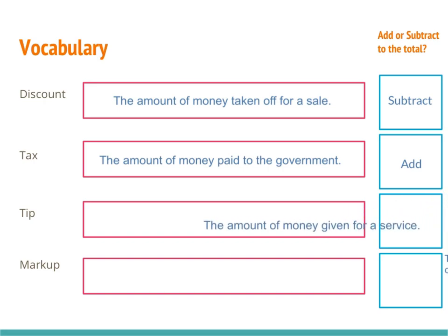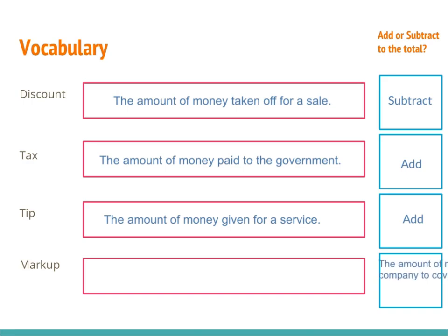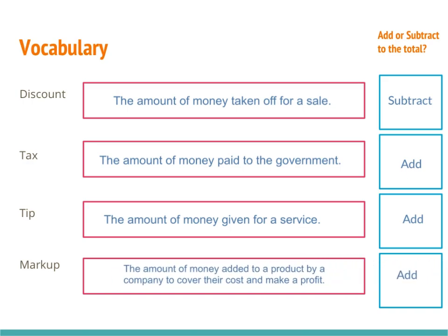Tip is the amount of money given for a service. A haircut, for example, is a service — you don't walk out of the store with anything in your hands, but you paid for something to happen. We generally add a tip to the bill. Markup is the amount of money added to a product by a company to cover their overhead cost and to make a profit. A store like Target has to charge you more than they paid for it to cover employees, rent, power, and water.